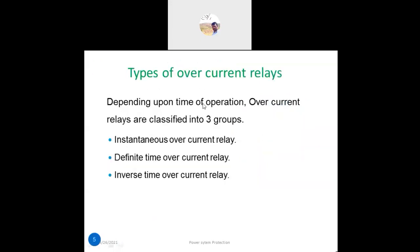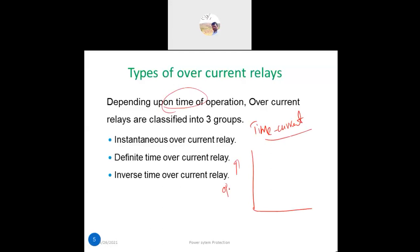Now let's look at the types of overcurrent relays. Depending upon the time of operation, overcurrent relays are classified into three groups: instantaneous overcurrent relay, definite time overcurrent relay, and inverse time overcurrent relay. We analyze these using time-current characteristics, with operating time on the y-axis and current on the x-axis.